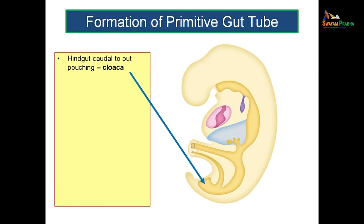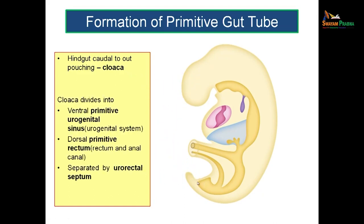Towards the caudal aspect — caudal to the communication — you have the hindgut. And the caudal most end of the hindgut is known as the cloaca. You have a caudal most pouching just caudal to the allantoic diverticulum, and that is known as cloaca. The cloaca is actually dividing into a ventral portion and a dorsal portion. The ventral portion is known as the primitive urogenital sinus, which gives rise to the urogenital system.